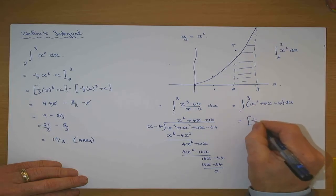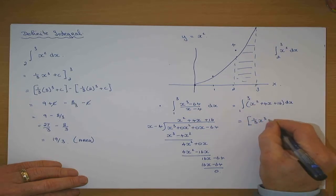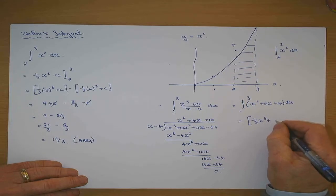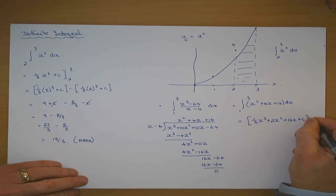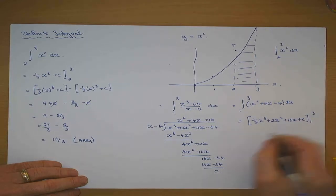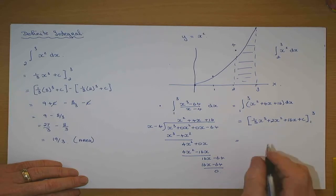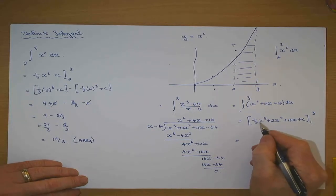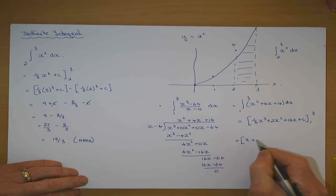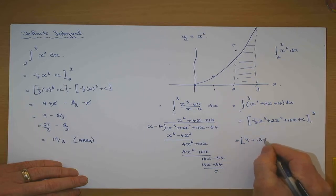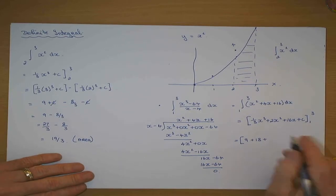Integrating x squared gives one third x cubed. Plus 4x gives 4x squared over 2, which is 2x squared. Plus 16x plus c, from one to three. Putting in three first: a third of three cubed is 9, plus twice three squared is 18, plus 16 times three — plus c.